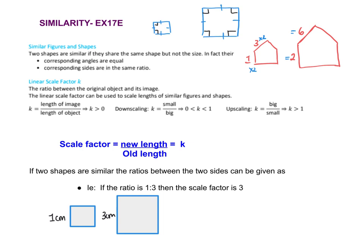It doesn't matter if the shape is enlarged up or reduced down by the same amount. That amount you're enlarging by is known as the scale factor. They often use the letter K, and they say 'linear scale factor' — linear just means length. So when we were measuring the sides of the house, that's a length, and that's how we find the scale factor.